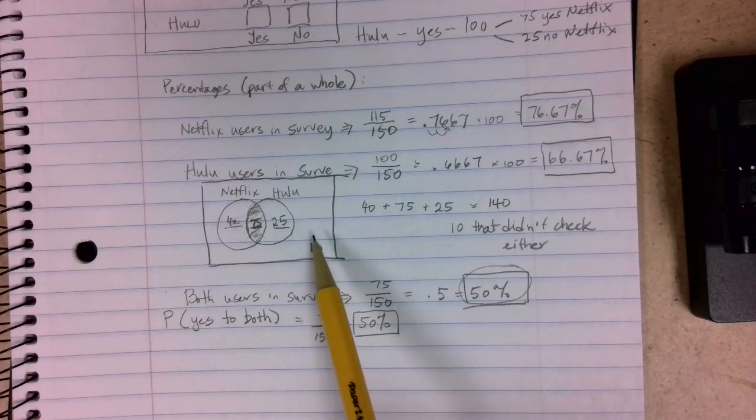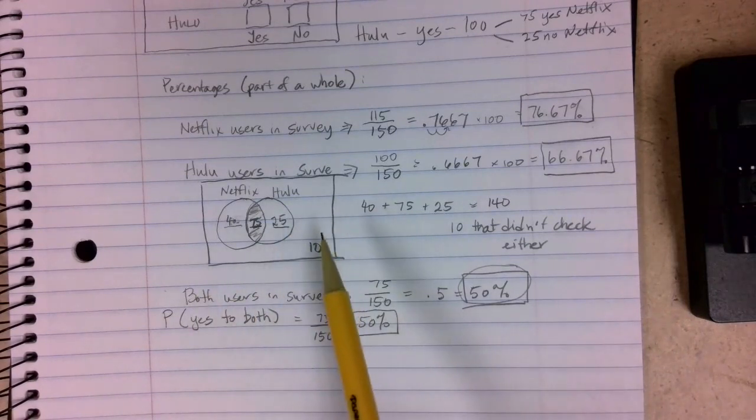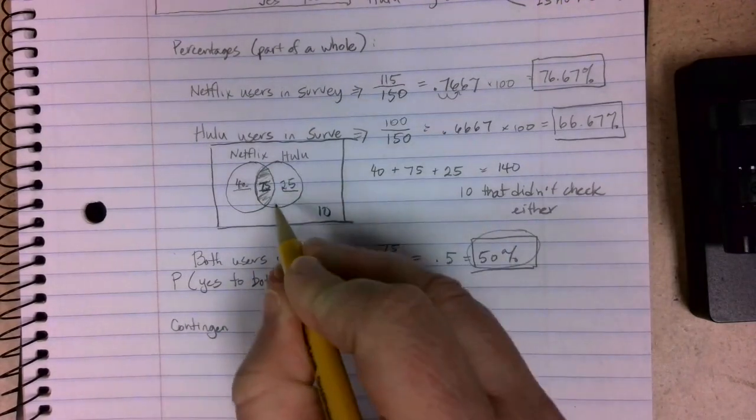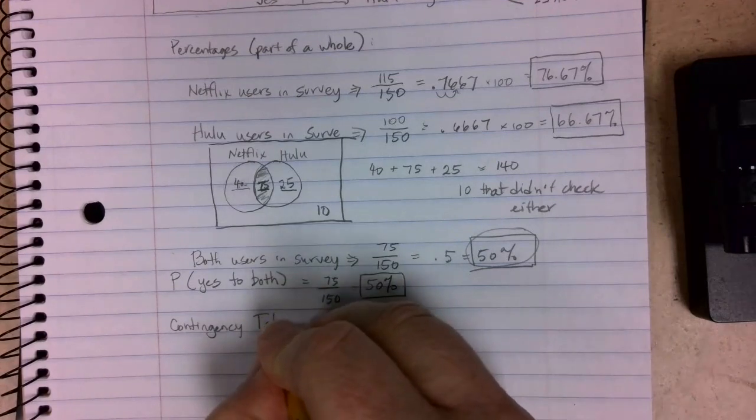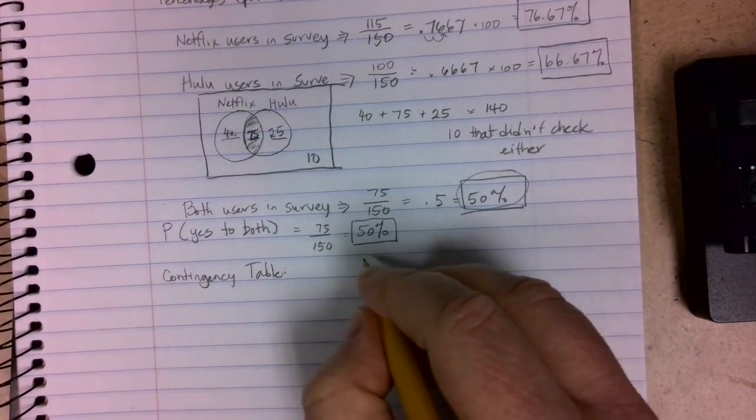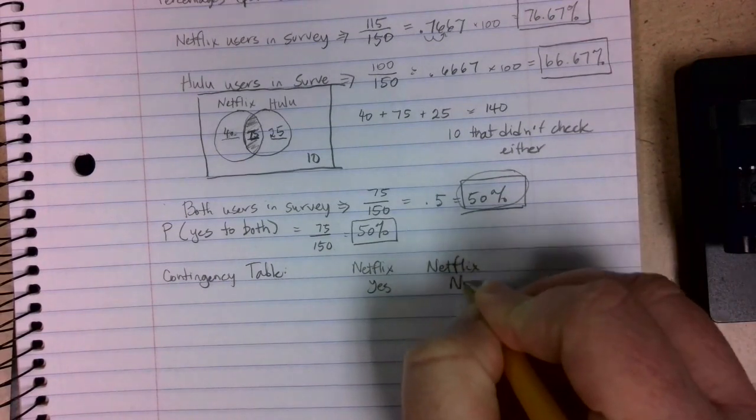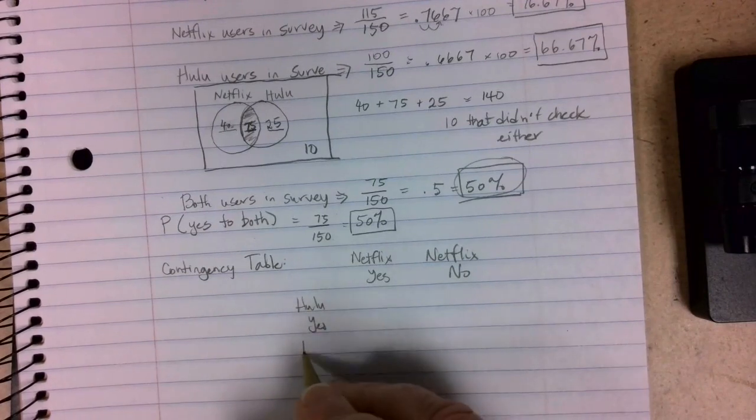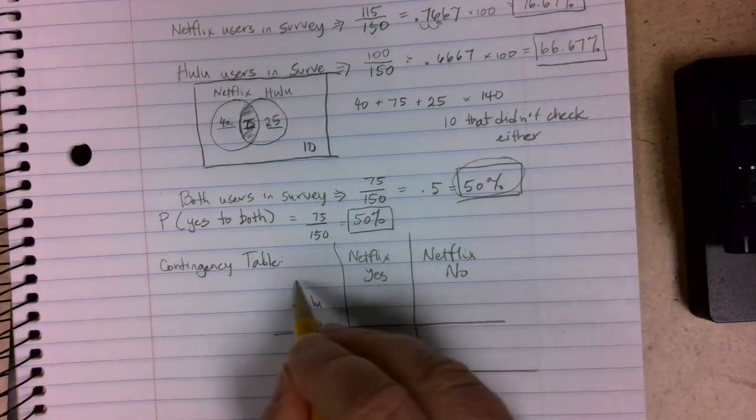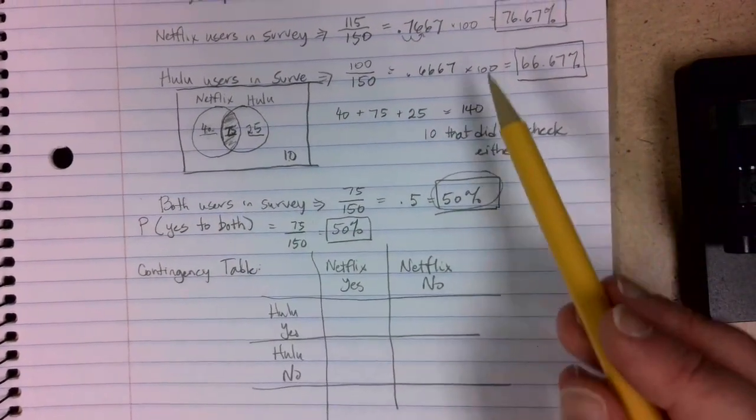Now, having a picture like this works out very nicely if we only have two categories of things that we're looking at. If we have more categories than this, then it's often going to be helpful for us to create something that's called a contingency table instead. In fact, it works great for situations just like this as well. The way a contingency table works is you want to write all your options for one category out one direction and all your options for your other category out in the other way.